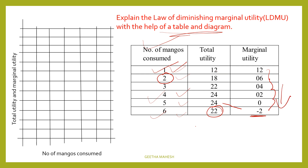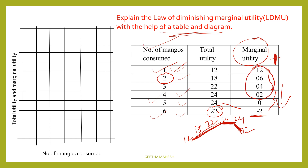As total utility first increases — 12, 18, 22, 24 — marginal utility is decreasing each time. As long as marginal utility is positive, total utility will increase. If marginal utility is zero, total utility is at its maximum. If marginal utility is negative, total utility will decrease.